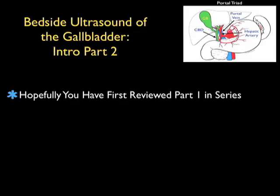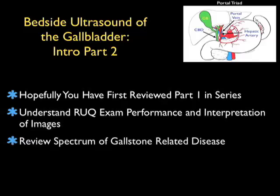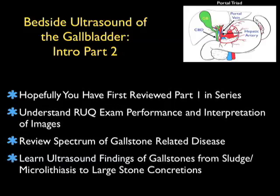Hopefully, you've reviewed Part 1 in the series and have a basic understanding of how to perform the right upper quadrant exam, and how to interpret the images that you will obtain. In this module, we're going to focus specifically on the spectrum of gallstone-related disease, beginning with the deposition of cholesterol crystals known as gallbladder sludge and microlithiasis, onto the ultrasound findings with large stone concretions that may cause biliary colic and acute cholecystitis.